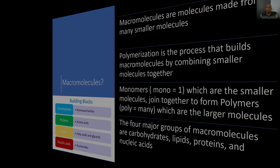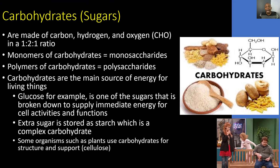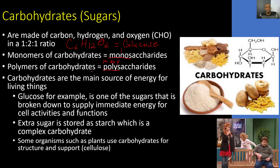We'll start off with carbohydrates first. Carbohydrates or sugars are made of carbon, hydrogen, and oxygen in a one-to-one ratio. For example, we have C6H12O6 — notice that one-to-one ratio — and this is a simple sugar in the form of glucose. The monomers of carbohydrates are monosaccharides, where mono literally means one, and the polymers of carbohydrates are polysaccharides, where poly literally means many. Carbohydrates are the main source of energy for living things, and glucose is one of the sugars broken down to supply immediate energy for cell activities and functions.